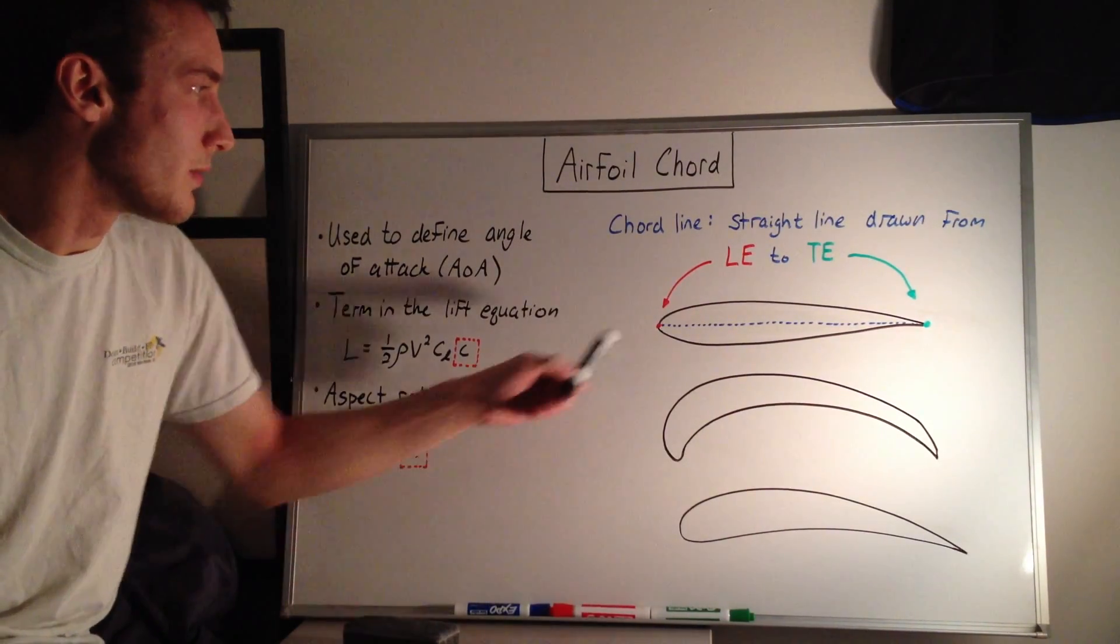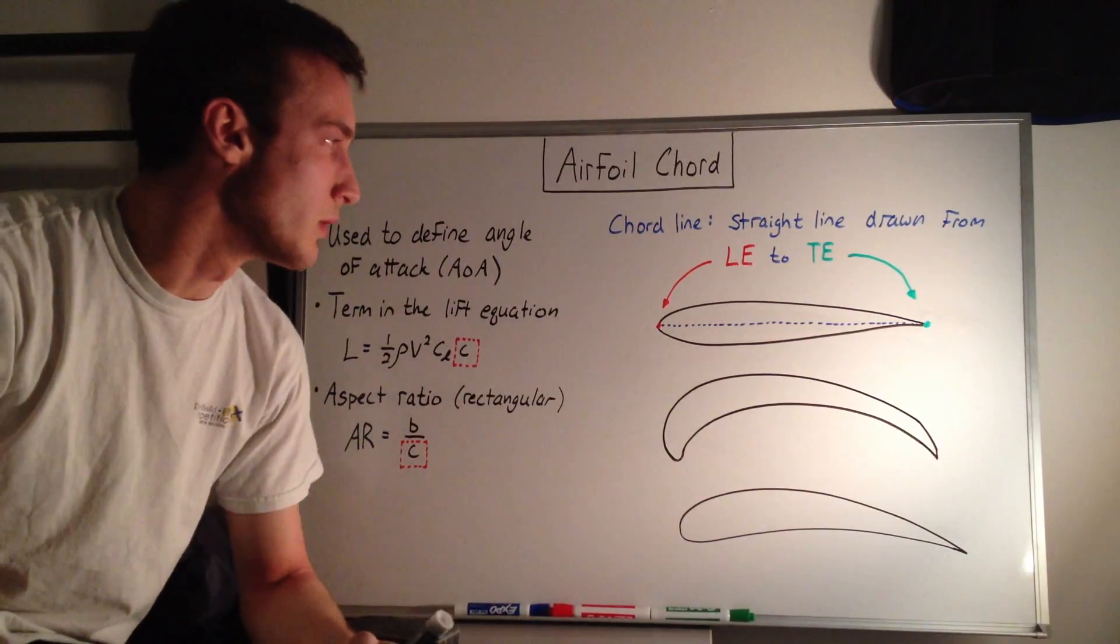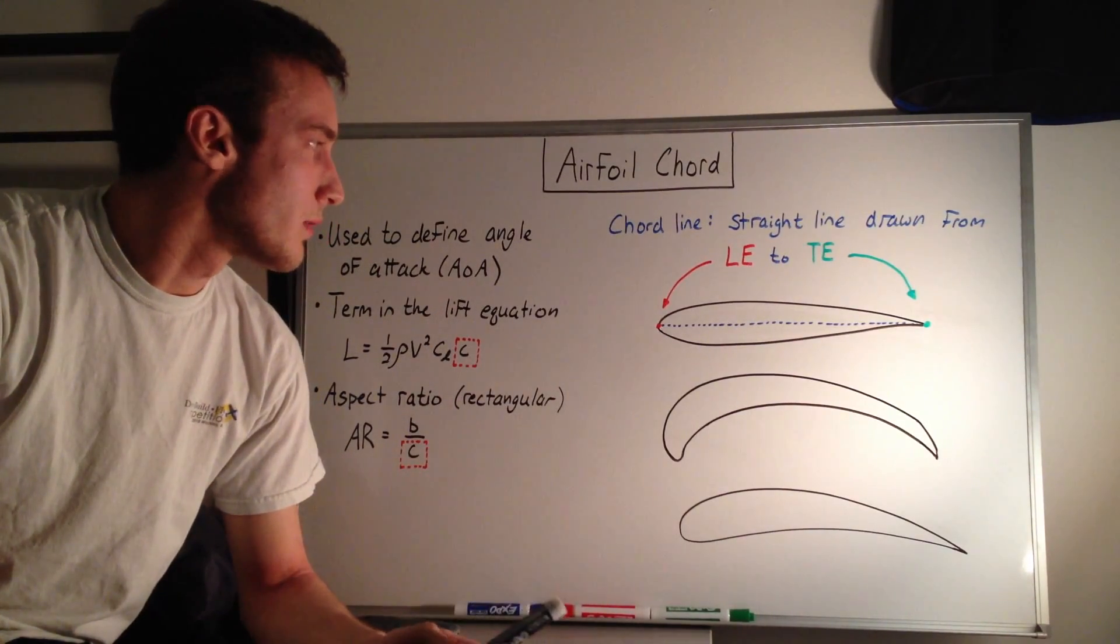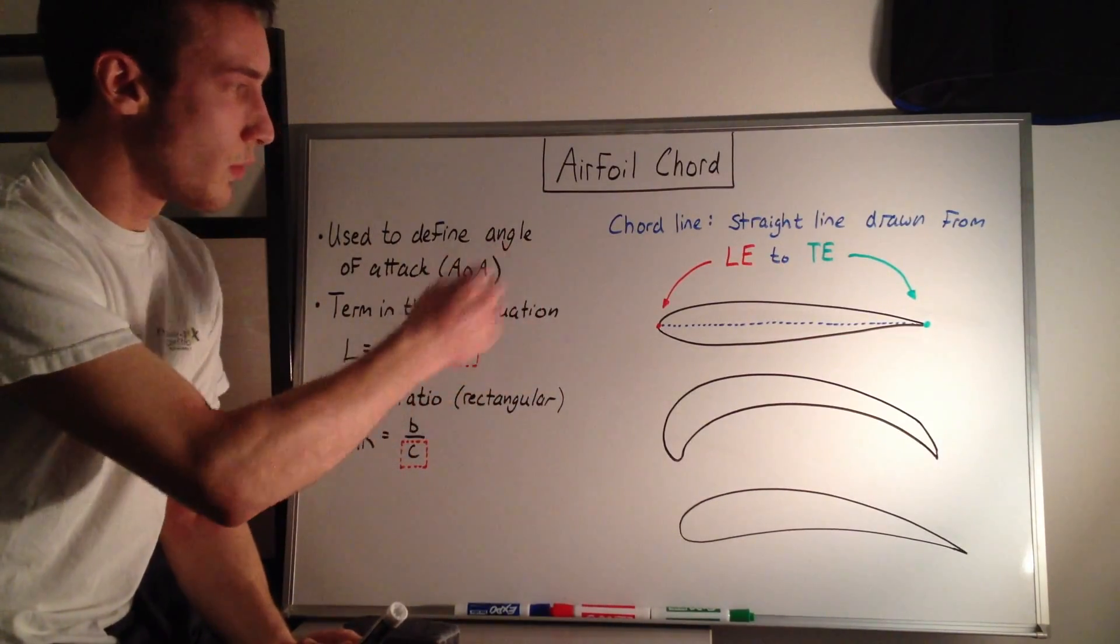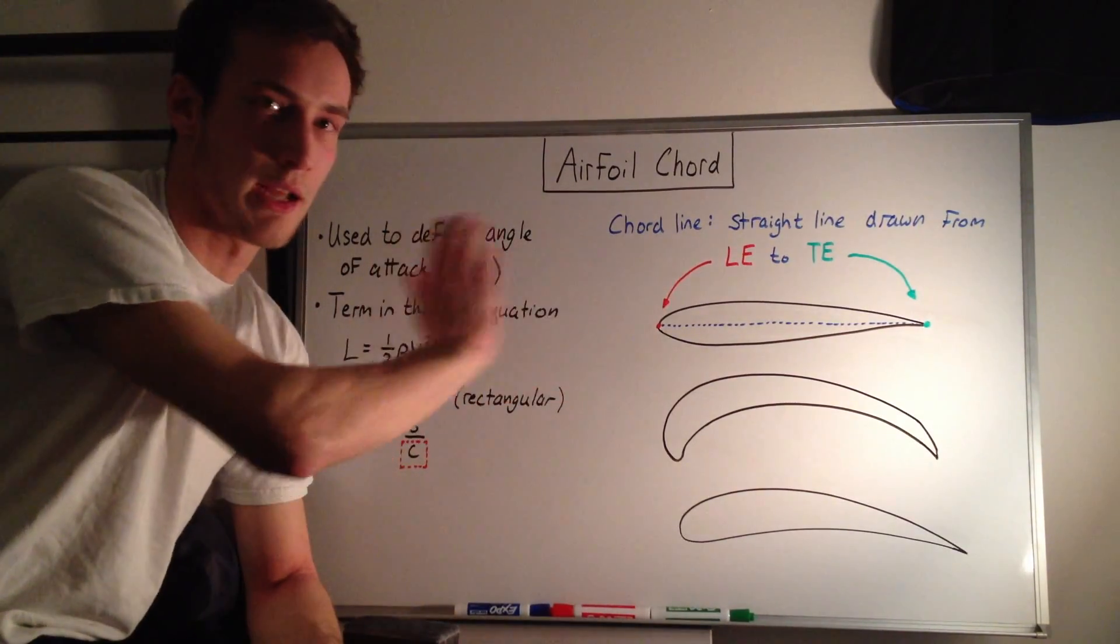In this case, in this airfoil, it's just a simple, I tried to draw a symmetrical airfoil. In this airfoil, you could say that the leading edge is the most forward point of the airfoil, and the trailing edge is the most aft point of the airfoil.